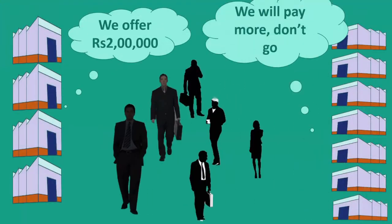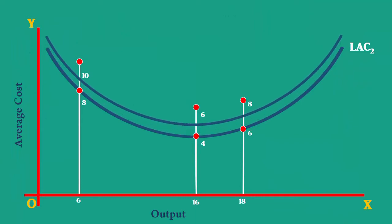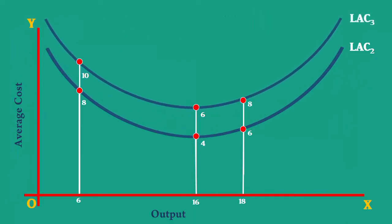Similarly, some strong firms will try to attract specialists and experts from rival firms by offering higher salaries. The affected firms, in order to prevent this tendency, hike their salaries exorbitantly. The same thing will happen in the case of skilled workers also. All these things will push up the cost. These are all negative benefits, otherwise known as external diseconomies.